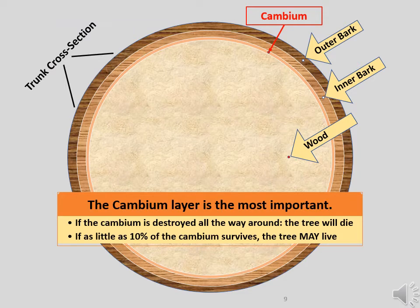This image portrays the different layers that exist within the trunk of a tree: the outer bark, the inner bark, the cambium, and finally the wood. This diagram is of course not to scale. The cambium is the most important layer. If most of it survives intact and undamaged, the tree will probably survive. The tree can in fact survive on as little as 10% of its cambium, though it will of course be in poor condition.